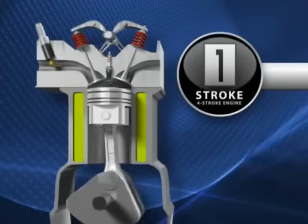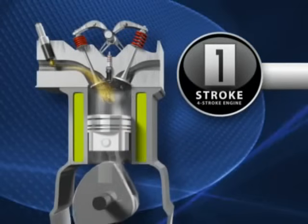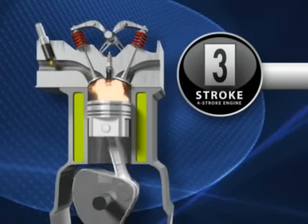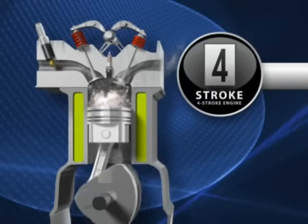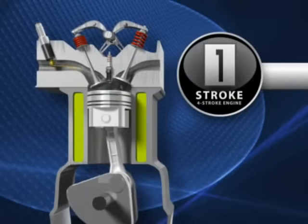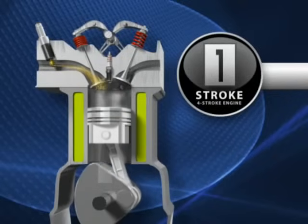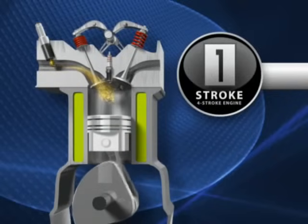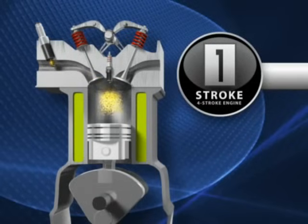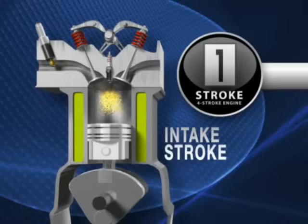A four-stroke engine is called a four-stroke because four up and down motions are needed to complete the cycle. In the first stroke, the piston travels downward as the intake valve opens and a mixture of air from the atmosphere and a metered amount of gas from the electronic fuel injector enter the cylinder. This is called the intake stroke.